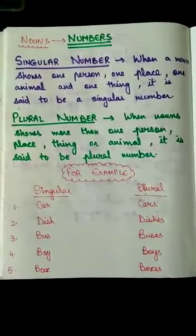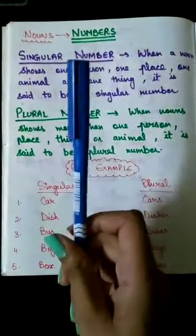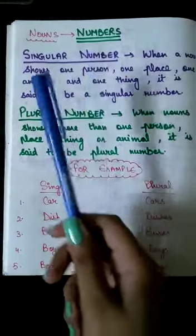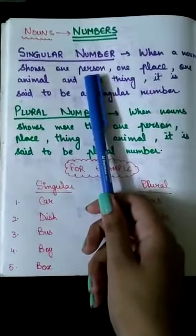So when we talk about one thing, see, I am having one pen in my hand. So what is it known as? Singular number. Right?